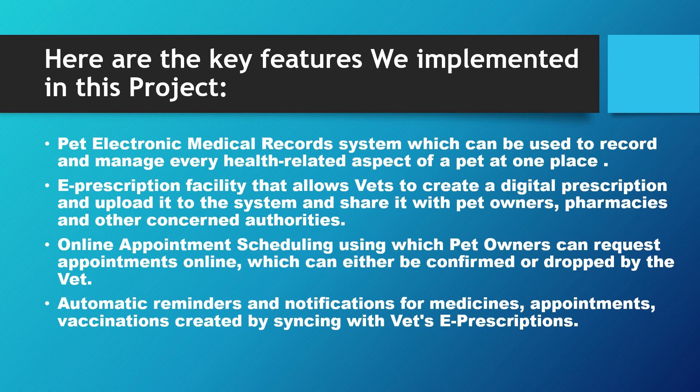The pet electronic medical record system can be used to record and manage every health-related aspect of a pet at one place. The e-prescription facility allows vets to create digital prescriptions and upload them to the system and share with pet owners, pharmacies, and other concerned authorities. Scheduling allows pet owners to request appointments online, which can be confirmed or dropped by the vet. There are also automatic reminders and notifications for medicines, appointments, and vaccinations, created by syncing with vet e-prescriptions.